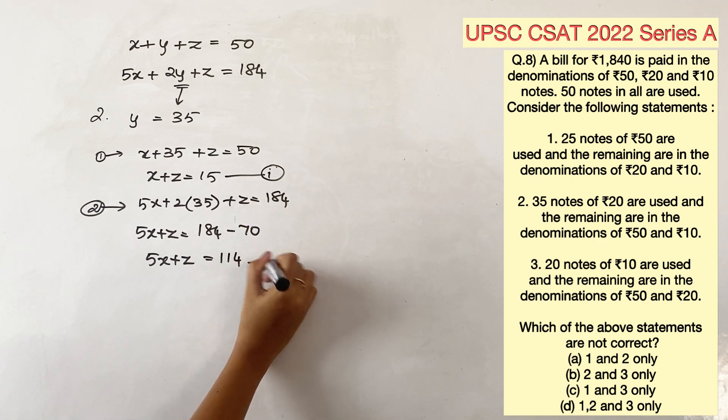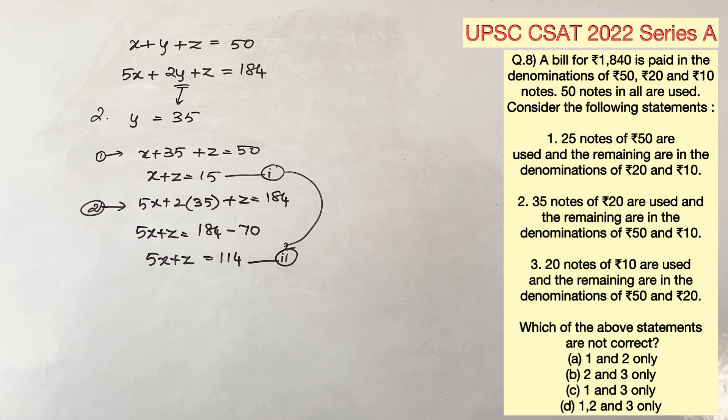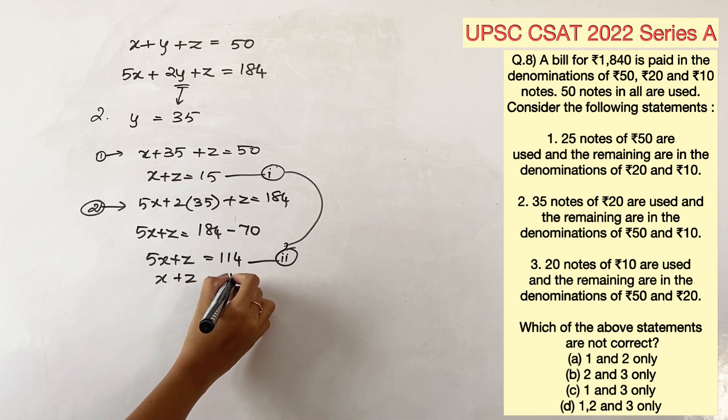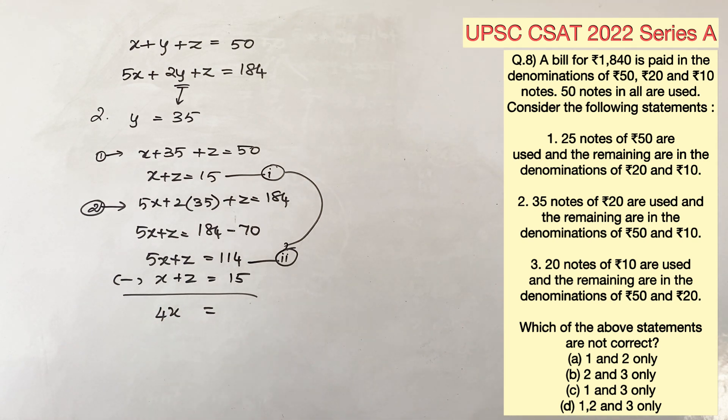Solving these two equations to get the value of x, subtracting this equation will give us 4x is equal to 114 minus 15, which is 99. 99 divided by 4 is going to give us a decimal value, which is not possible in case of number of notes. So, we are going to eliminate this as well, because statement 2 is also not possible.